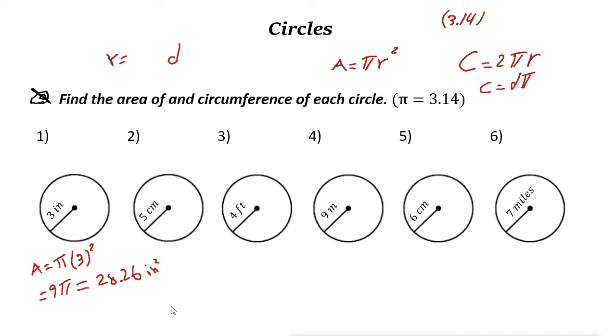Next one: radius is 5, so area is pi R squared. 5 squared is 25, so it is 25 pi. If you use a calculator, 25 times 3.14, then it is 78.5 square centimeters.